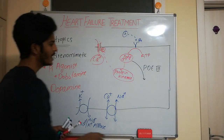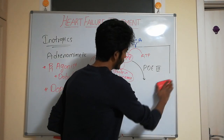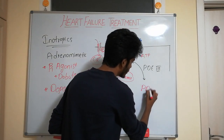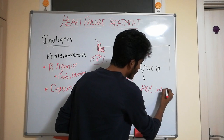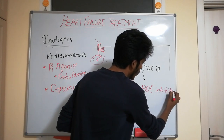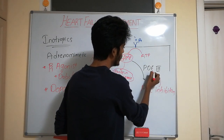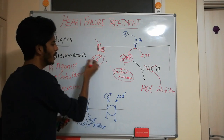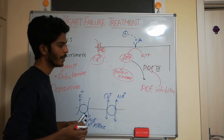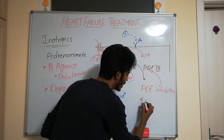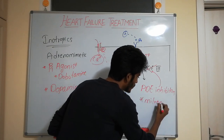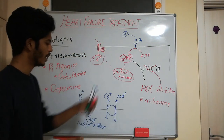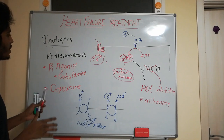Another group of inotropic drugs is PDE inhibitors. PDE inhibitors inhibit PDE3, so cAMP is not broken down, leading to more activation of protein kinase and more intracellular calcium. The PDE inhibitor drug used here is milrinone.